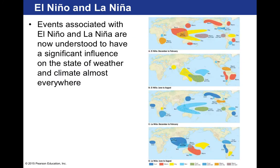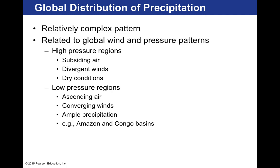Events associated with El Niño and La Niña are understood to have a significant influence on weather and climate almost everywhere. Data shows that every region on Earth is affected by strong El Niño and La Niña weather patterns.